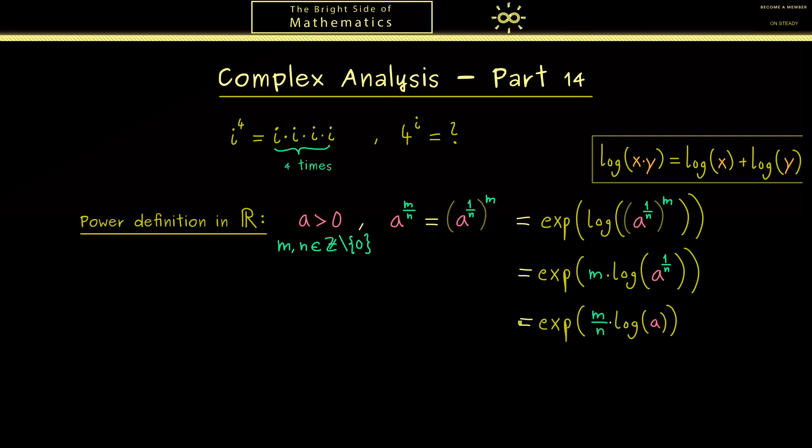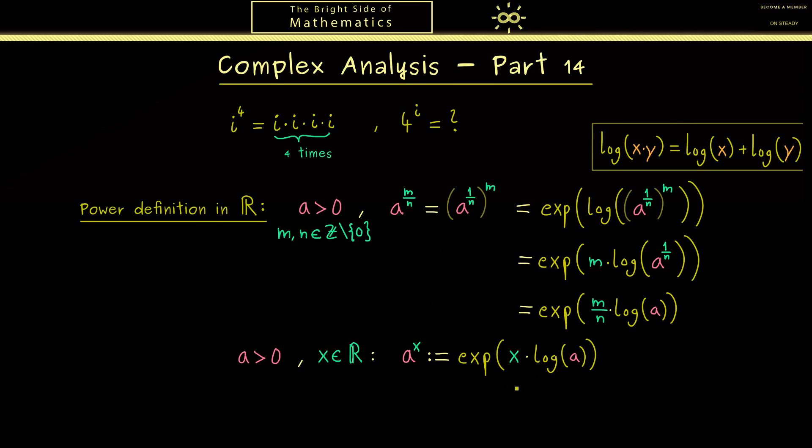Please note this identity holds for every rational number. Therefore, we can just extend the right-hand side to every irrational number as well. This means that we have a straightforward definition for a to the power x: it's just defined to be the exponential function of x times the logarithm of a. With this definition, we just close the gaps in the real number line to get a continuous function. However, now you should see if x is a complex number, this definition should work as well.